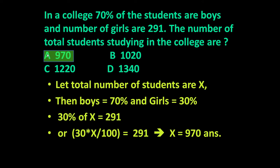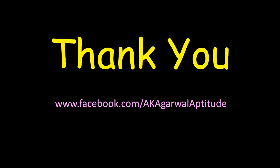x is equal to 970. So the answer is option A, 970 — there are a total of 970 students in the college. Thank you very much friends for watching this video. You can also follow me on Facebook.